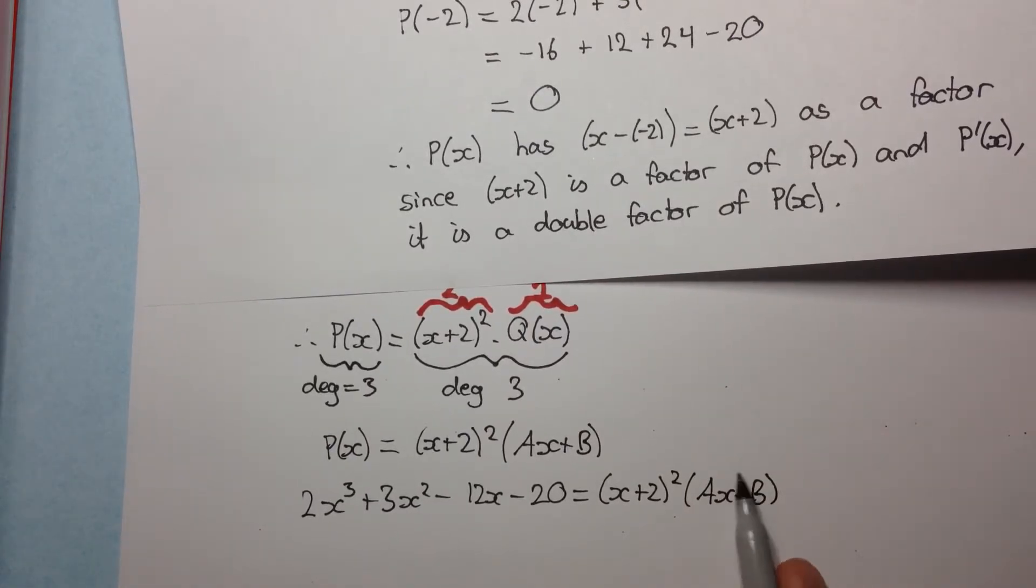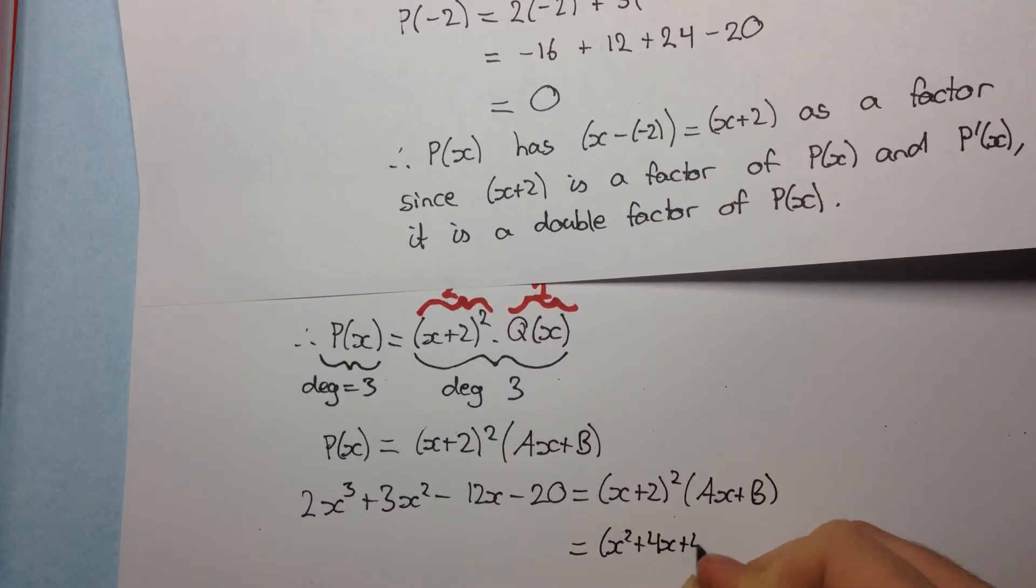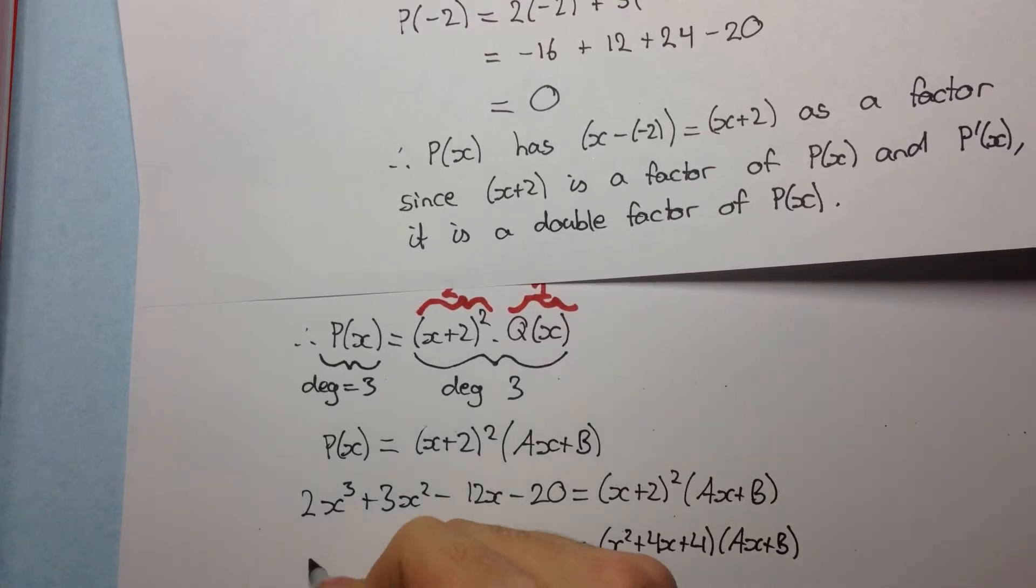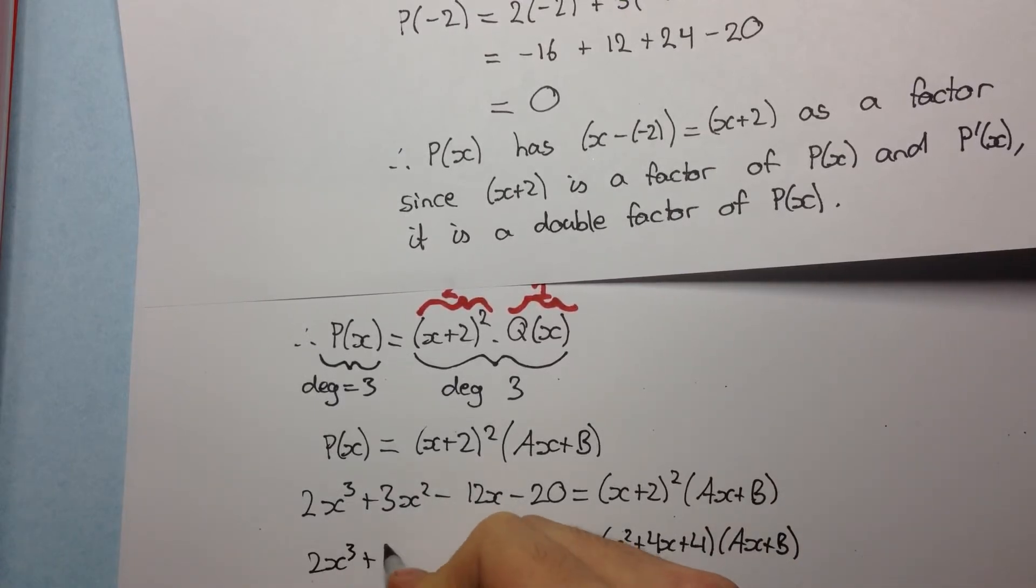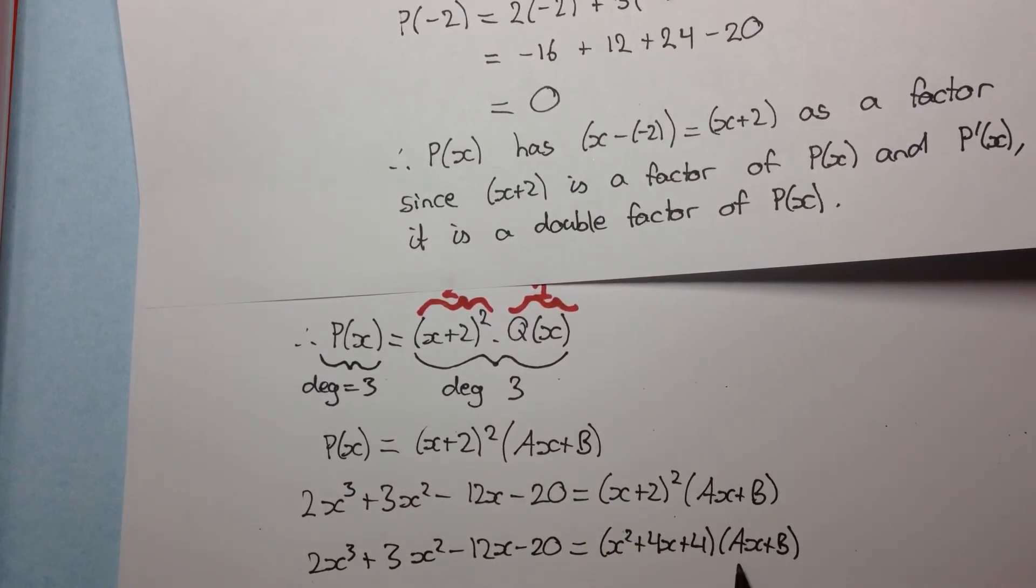2x³ + 3x² - 12x - 20 equals (x + 2)² into Ax + B. Now you can go ahead and work out what this is by doing long division or something. Any method, really. My preferred method is to expand out x + 2. So we expand this out. And now we just compare coefficients of certain powers of x.